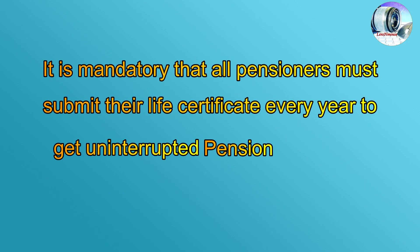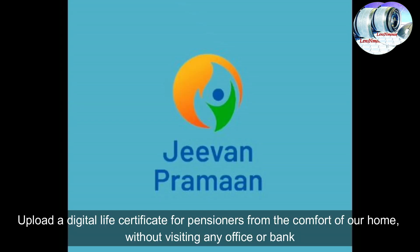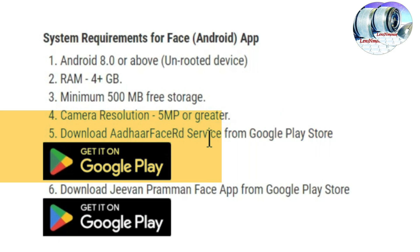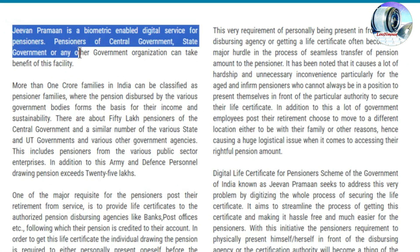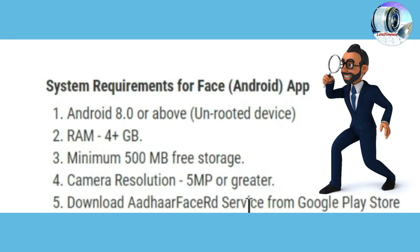It is mandatory that all pensioners must submit their life certificate every year to get uninterrupted pension. The Government of India has introduced an online application called Jeevan Praman to submit the digital life certificate online. We need to install the Android Face RD Service and Jeevan Praman Face app from the Google Play Store. Pensioners of central government, state government, or any other government organization can take benefit of this facility. The smartphone must have Android 8.0 or above, 4GB RAM, 64GB memory, at least a 5-megapixel camera, and at least 500 MB of free space.